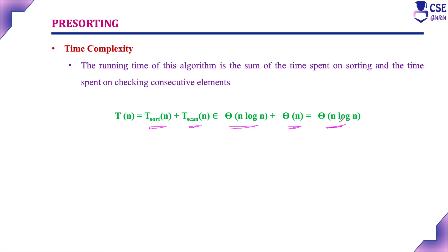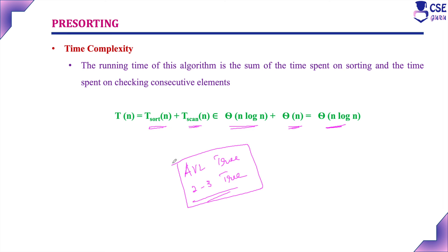This concludes the introduction to transform and conquer technique. Under this technique, the two main topics we will discuss are AVL trees and 2-3 trees, both of which fall under the category of balanced search trees. Both topics are very important from an exam point of view and will be discussed in detail with examples.